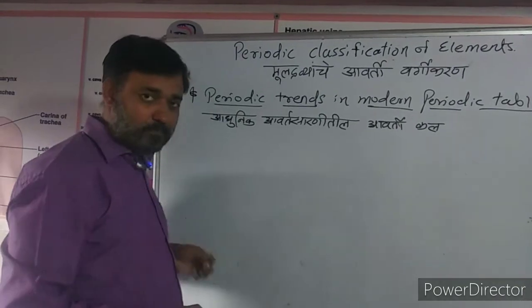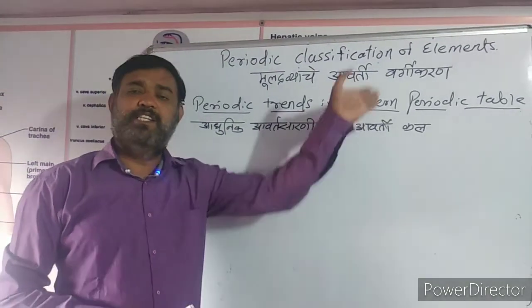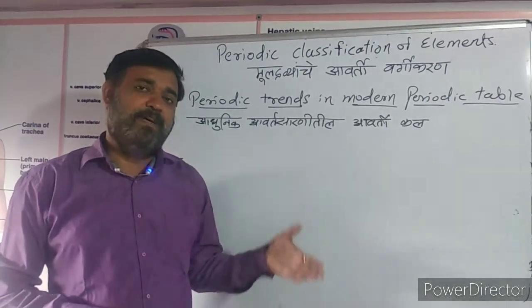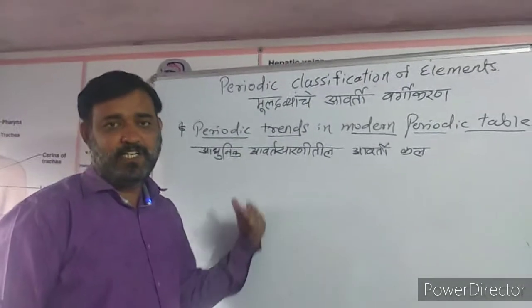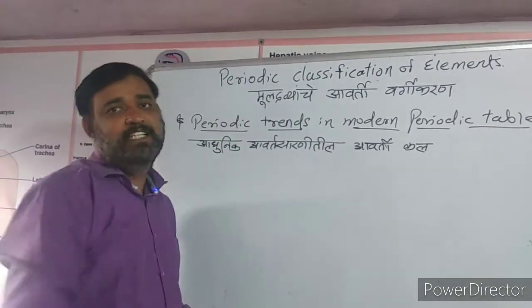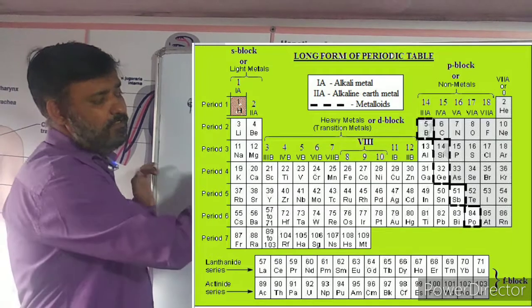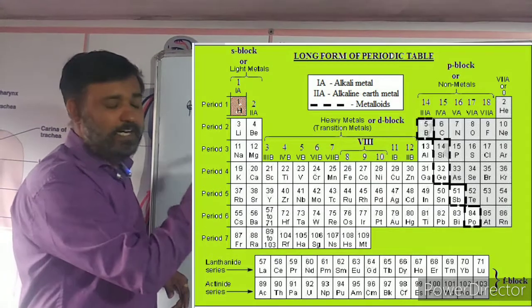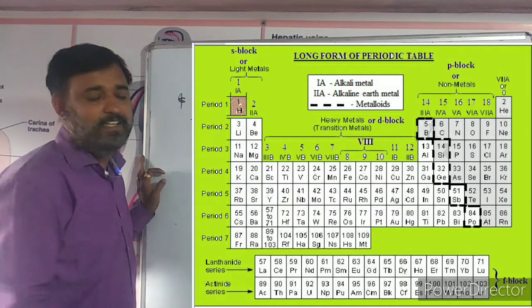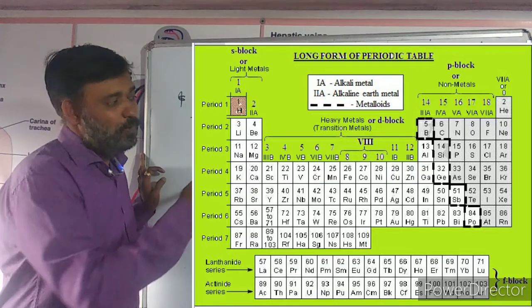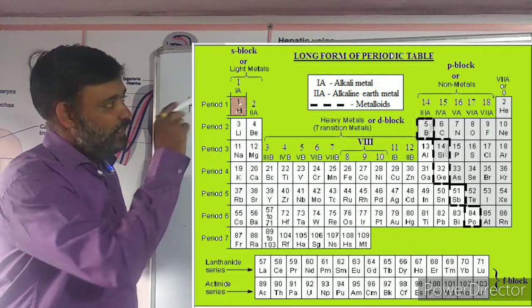In today's lecture we have to learn periodic trends in the modern periodic table. We know that the modern periodic table is based on the increasing order of atomic number, and all elements are placed by their electron configuration in periods and groups. While observing the modern periodic table, we find that there is a regularity in the properties of elements in certain periods or groups — and that is called a trend.